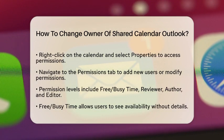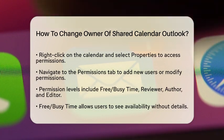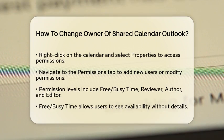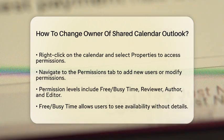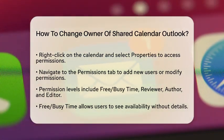There are several permission levels you can assign. The Free/Busy Time option allows users to see when you are busy or free, but they cannot view any details. The Reviewer permission lets users view all details of the calendar but does not allow them to create or edit events.